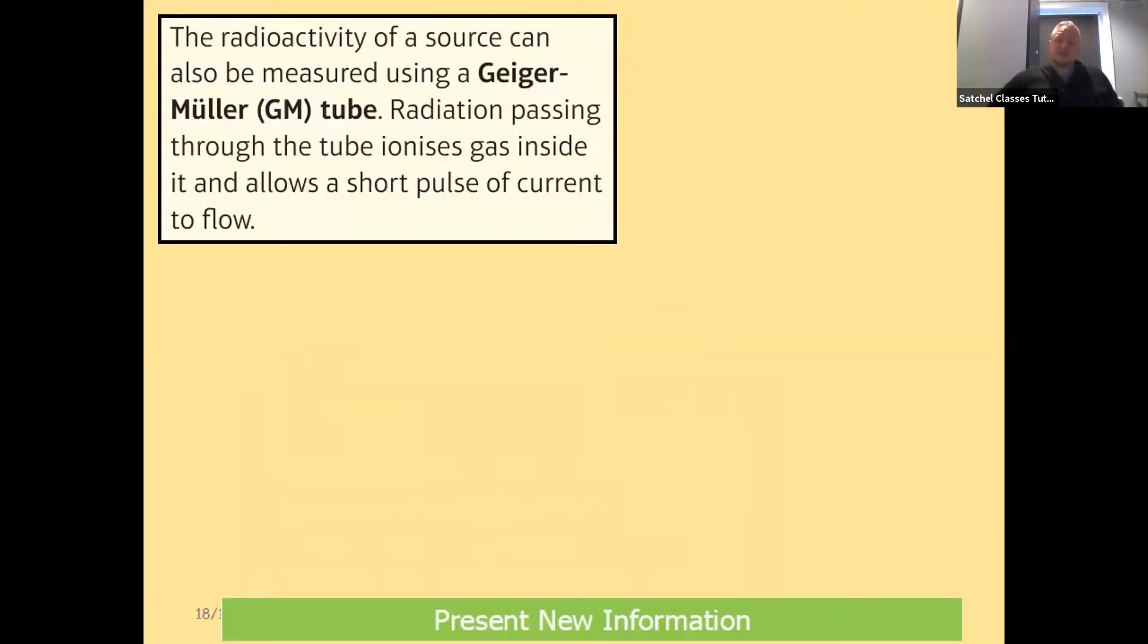The radioactivity of a source can also be measured using a Geiger-Müller tube. Now this is different. This isn't measuring the radioactivity in terms of how much something's been exposed to. It's measuring how much is being given off by a source that you might be considering using for something. Radiation passing through the Geiger-Müller tube ionizes a gas inside it and allows a short pulse of current to flow along it, much like what happens inside a smoke alarm with Americium-241.